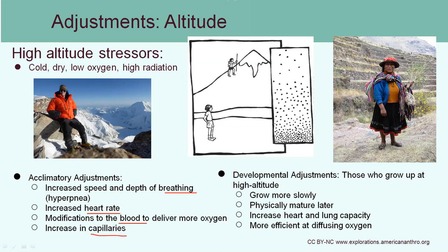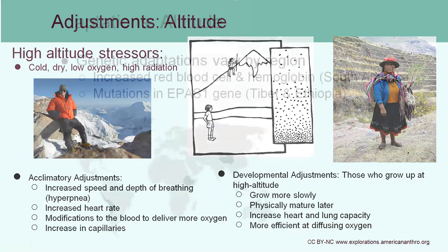On the right-hand side, we see some developmental adjustments for people who actually grow up at high altitude. If a baby is raised at high altitude and lives there for long periods of time, they're going to mature more slowly and physically develop later, but they're going to have larger heart and lung capacity than someone who lives at sea level. The individual in the picture is a lady who lives in the Andes mountains.